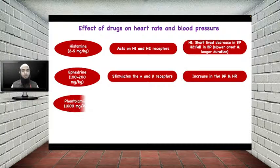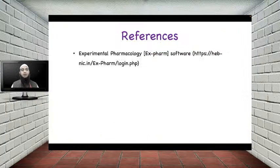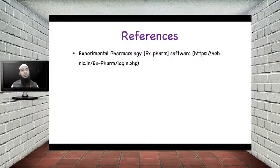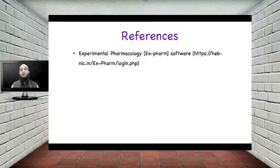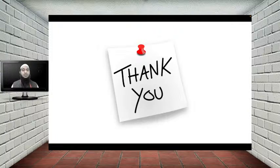This is all about today's experiment. To summarize, we studied the effects of different drugs on the heart. We covered adrenergic receptor agonists — epinephrine, norepinephrine, and ephedrine — as well as the alpha blocker phentolamine and the beta blocker propranolol, both of which decrease blood pressure. We also studied isoprenaline, a beta receptor agonist whose overall action is a decrease in blood pressure, and we studied combination drug effects. I have used the ExFarm experimental pharmacology software for the demonstration. Thank you very much for attending my session — please subscribe to my channel for more such learning.